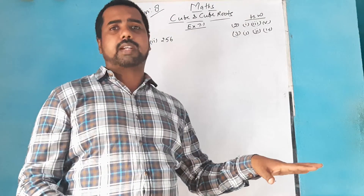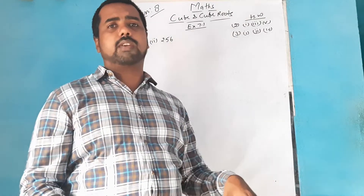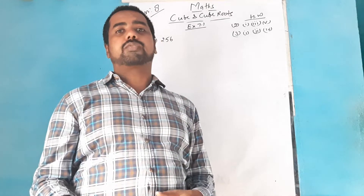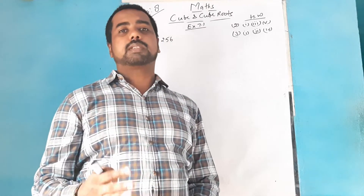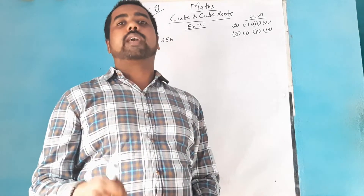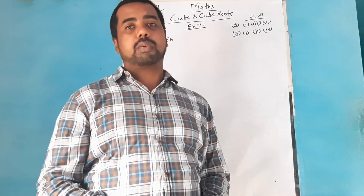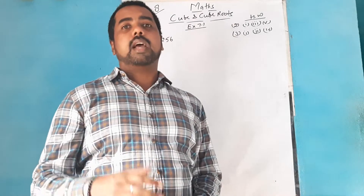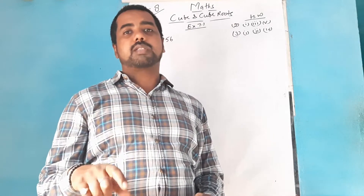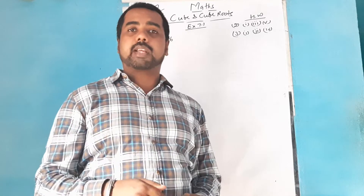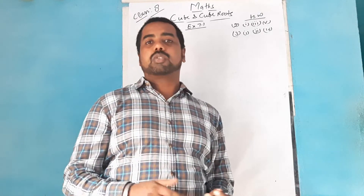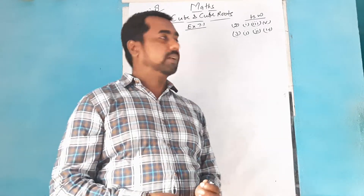We will apply prime factorization for the given number and try to make pairs of 3. If a pair of 3 for some factor is not possible, we find what is the least number to be multiplied. When finding the least number to be divided, if any extra number remains after making pairs of 3, we remove that number from the given number — that gives the least number to be divided.